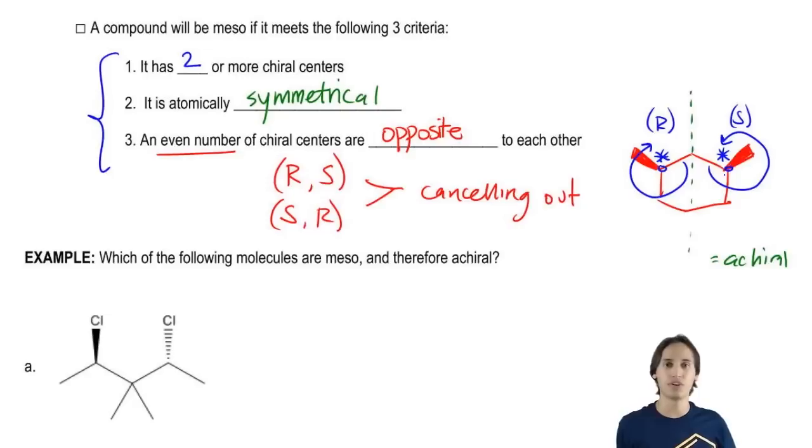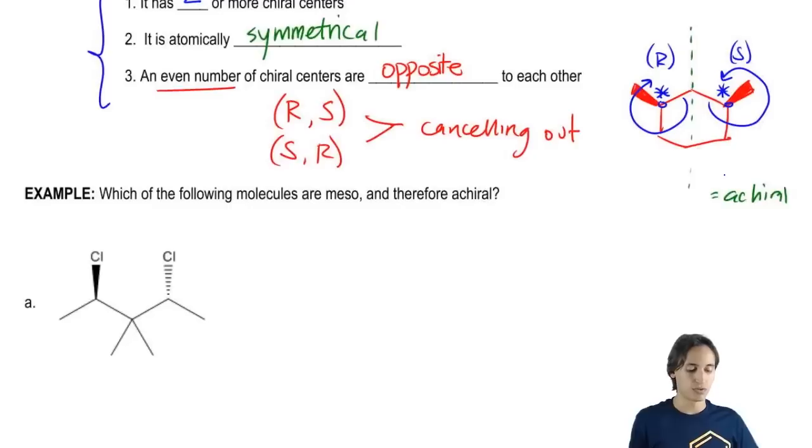Now you guys might be wondering, Johnny, that looks so much more complicated than just doing the internal line of symmetry. Why don't I just do the internal line of symmetry test? You can if it's a ring, but remember that only really works for rings. For other kinds of compounds, it doesn't work.